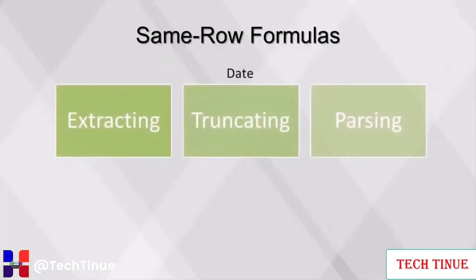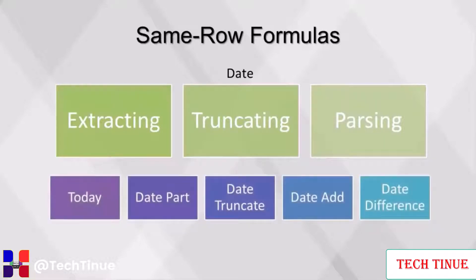We can also use formulas for extracting, truncating, and parsing date parts from a date field. A date or date-time field carries more information than a typical variable: the time of day, the day of week, the day of month, the month of year, the year number, and the difference in the date from other dates. The most heavily used date functions are: today, used to get today's date; date part, used to get a part of a date (e.g., getting the month of a date returns the numeric value of the month); date truncate, which returns a date value at the beginning of a specified period; date add, which adds or subtracts a certain number of periods to a date; and date difference, used to calculate the number of periods between two dates.